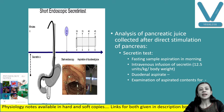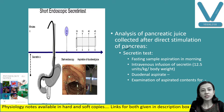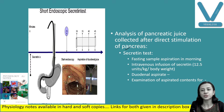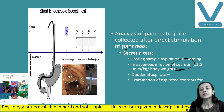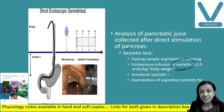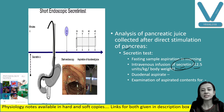Analysis of pancreatic juice is done after direct stimulation of the pancreas. The person is asked to stay overnight fasted. After fasting, duodenal and gastric samples are collected in the morning once the tube is in place. After that, an intravenous infusion of secretin is given. Secretin is a hormone which stimulates bicarbonate secretion from the pancreas. The dose is 12.5 units per kilogram body weight.